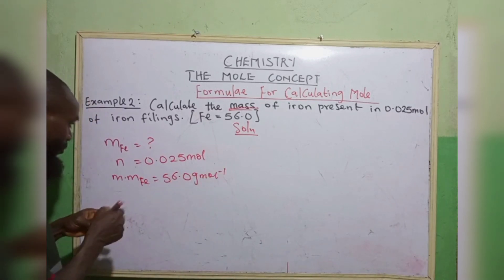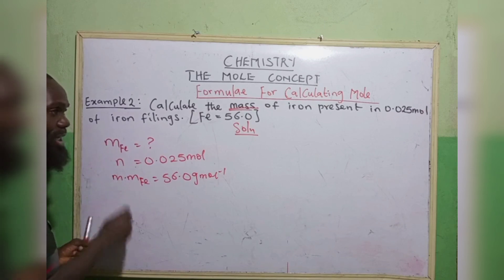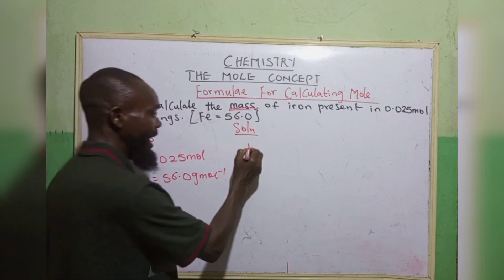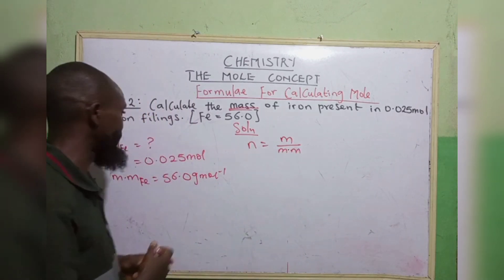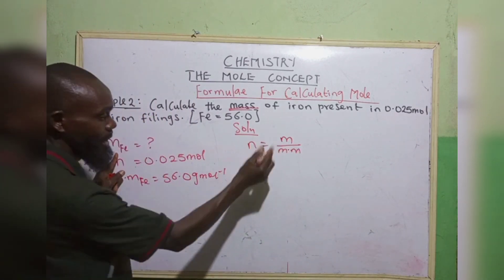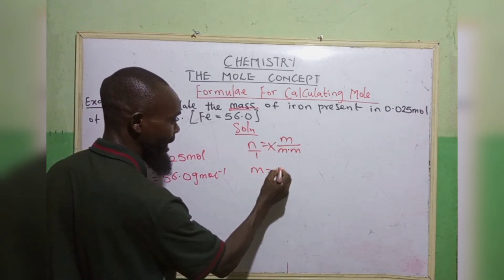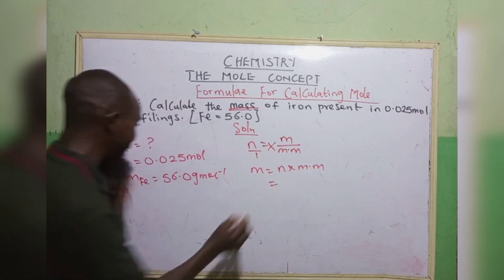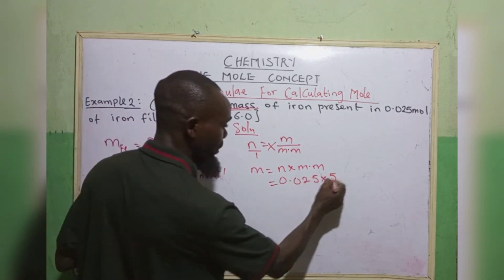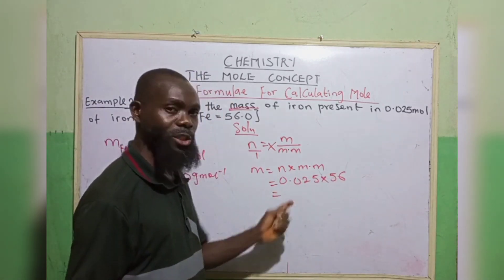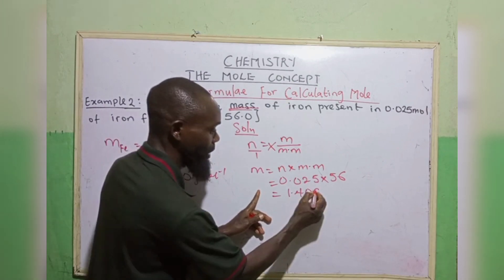When you look at this, we have n and we have molar mass. We are going to use formula 1: n equals to mass over molar mass. We want to calculate mass, so cross-multiplying: mass equals to n multiplied by molar mass. Our n is 0.025 multiplied by molar mass 56. When you multiply, we have 1.40 grams.